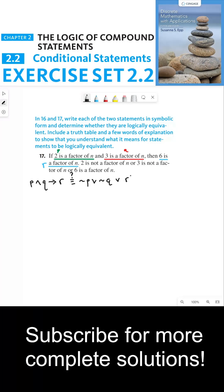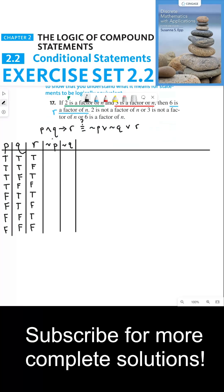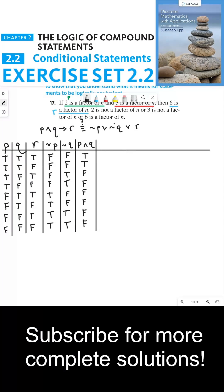Now we have to identify whether these two statement forms are logically equivalent and build a truth table. I'll start with a column for not P and a column for not Q, then a column for P and Q, and then P and Q implies R. Remember that the conditional is false precisely when the if part is true and the then part is false, and that's only the case in row 2 when comparing columns 3 and 6.